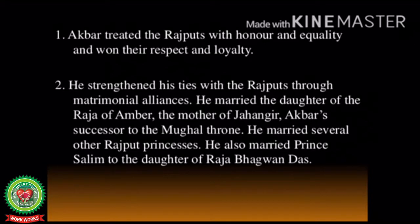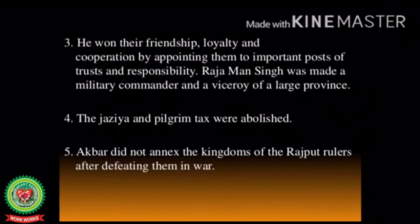Number two: he strengthened his ties with the Rajputs through matrimonial alliances. He married the daughter of the Raja of Amber, who became the mother of Jahangir, Akbar's successor to the Mughal throne. He married several other Rajput princesses and also married Prince Salim to the daughter of Raja Bhagwan Das. Number three: he won their friendship, loyalty, and cooperation by appointing them to important posts of trust and responsibility. Raja Man Singh was made a military commander and a viceroy of a large province.